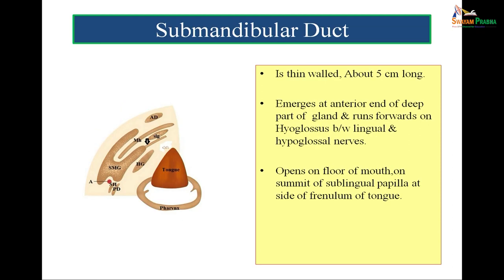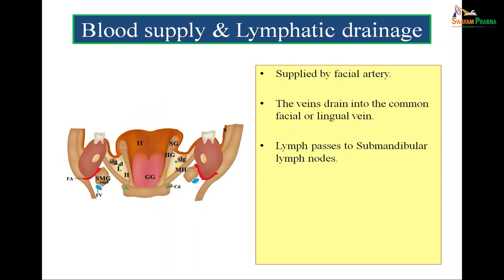The submandibular duct is thin-walled and about 5 centimetres long. It contains the viscous secretion of the mucous acini. The submandibular salivary gland is a mixed gland — its secretion is partly serous and partly mucous, and the mucous component is viscous in nature. The duct emerges at the anterior end of the deep part and runs forwards on the hyoglossus between the lingual and hypoglossal nerves. It opens on the floor of the mouth on the summit of the sublingual papilla at the side of the frenulum of the tongue. The gland is supplied by the facial artery; veins drain into the common facial or lingual vein, and lymph passes to the submandibular group of lymph nodes.